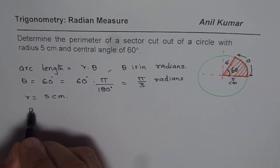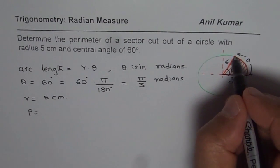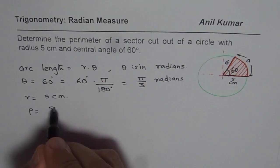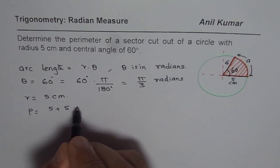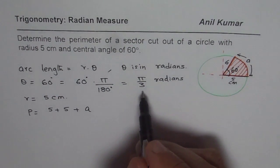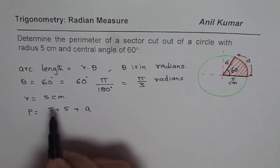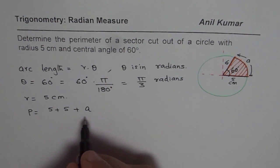Now, the perimeter will be equal to the sum of these two sides, these two radii, which is 5 plus 5, plus a. So we need to find what a is. We already know that theta is π by 3 and radius is 5. So we can calculate the value of a.